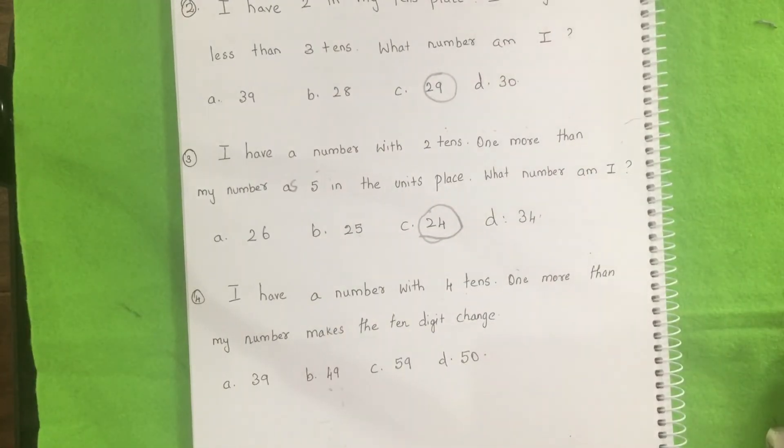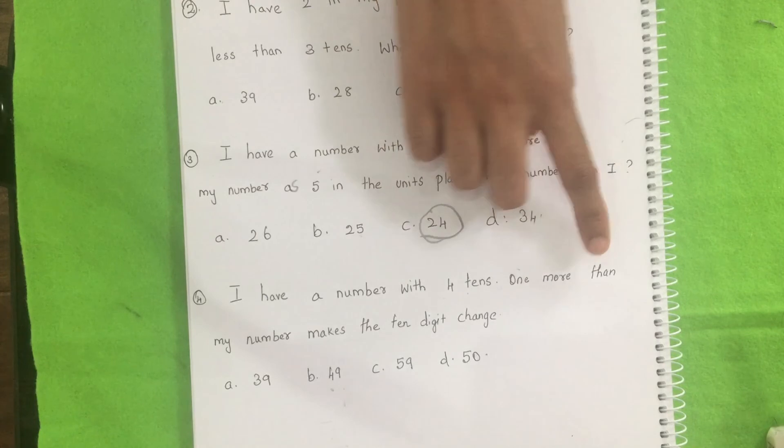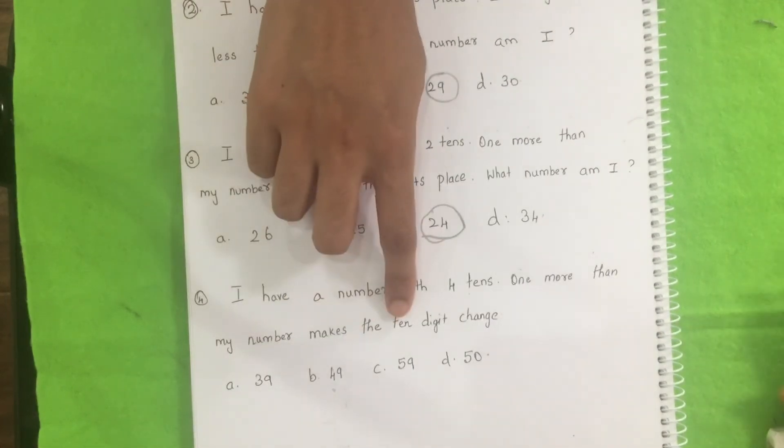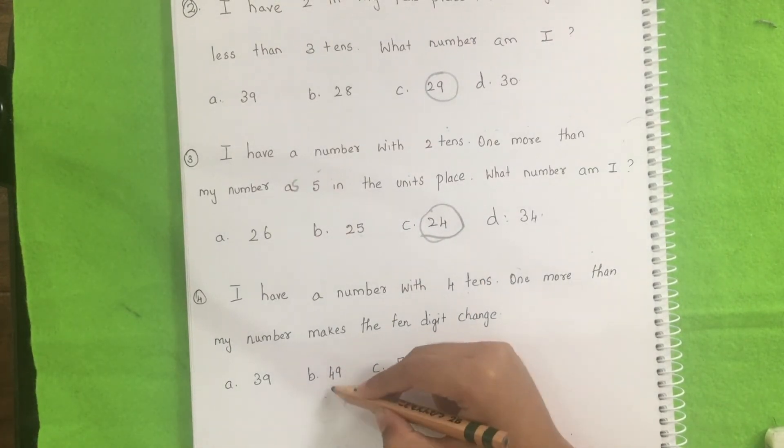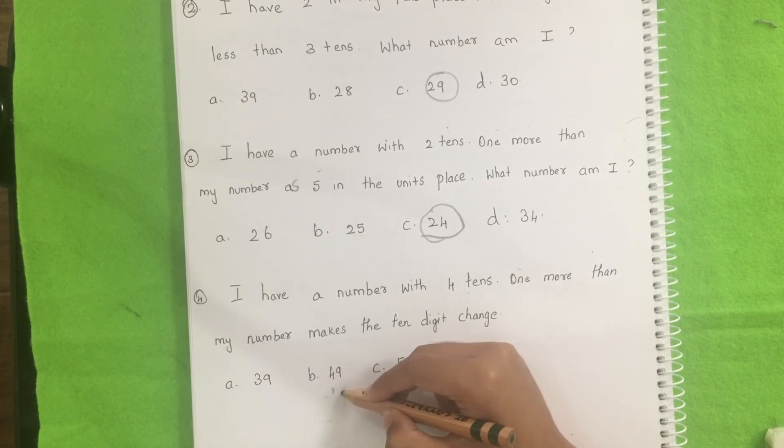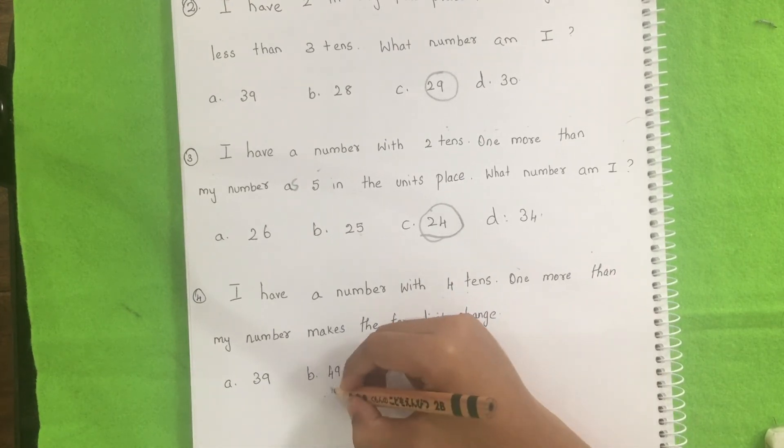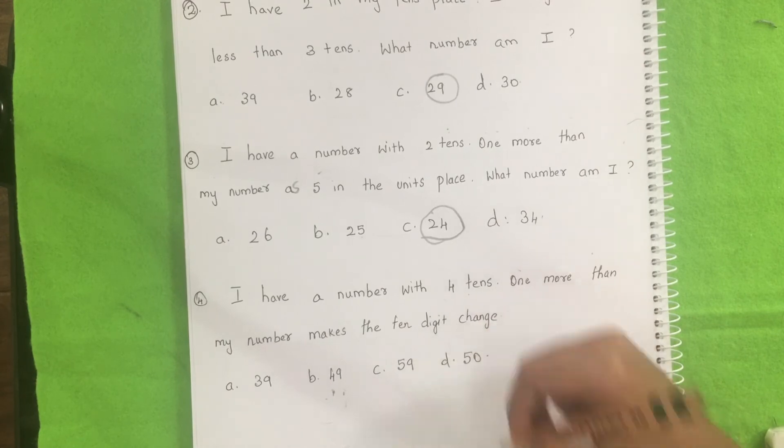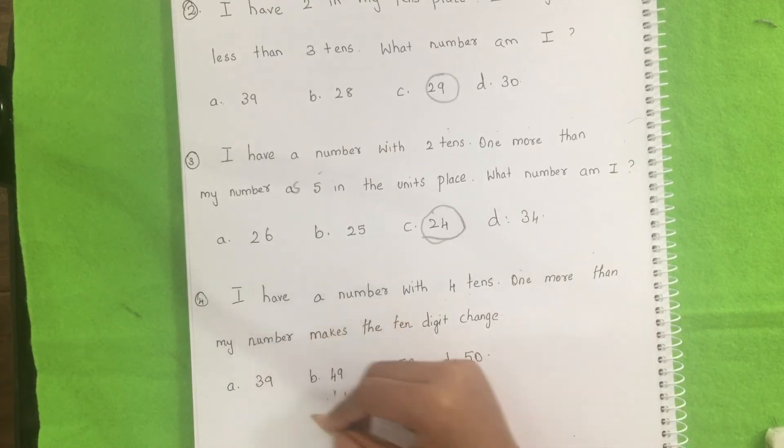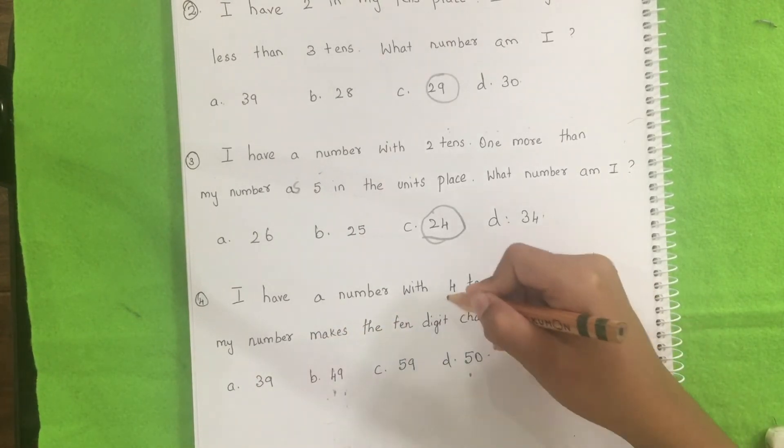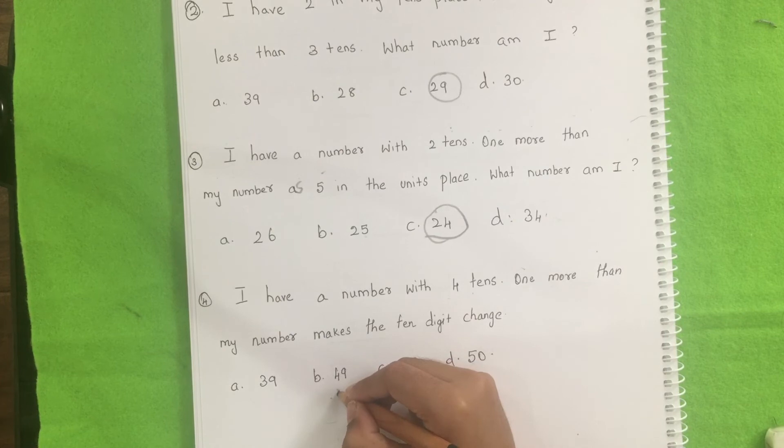So the next one is I have a number with four tens. One more than my number makes the tens change. 49. How? I said because there are four tens and nine units. And also if we put 49, the tens will change like five. It will be five. I didn't put 39 because this didn't say three tens. They said four tens. That's why I said 49.